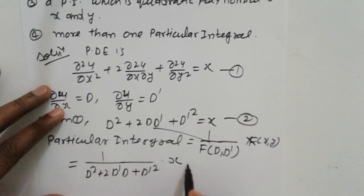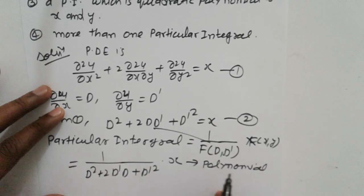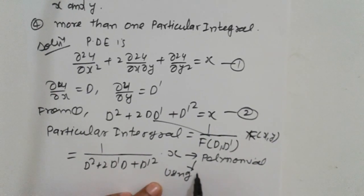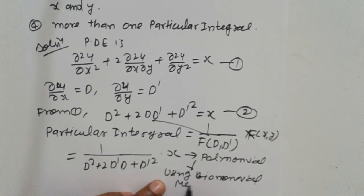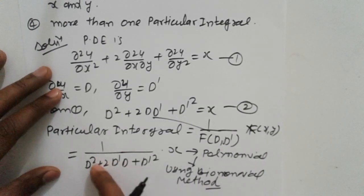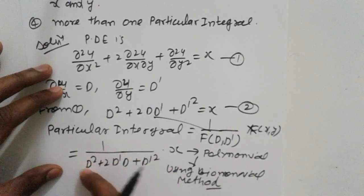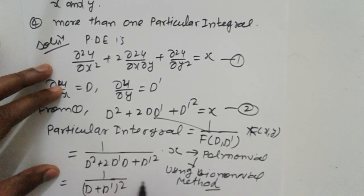Since x is a polynomial, we use the binomial method. This is important — the binomial method. We take D' common, so (D + D')² can be written as D'² · (D/D' + 1)² = D'² · (1 + D/D')².